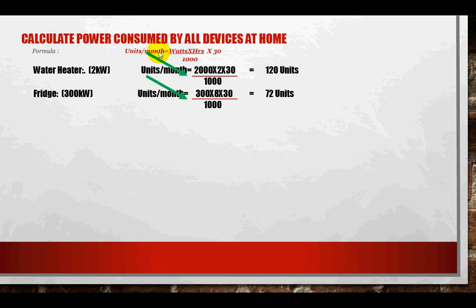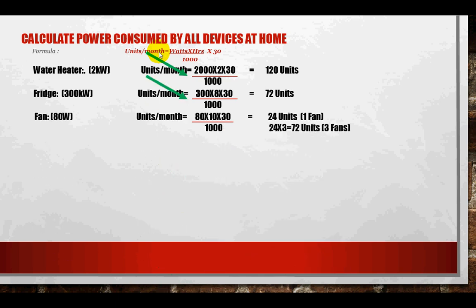Next is the fan. A fan operates at 80 watts for a period of 10 hours per day. Over 30 days it consumes 24 units. So one fan consumes 24 units, and therefore three fans consume about 72 units per month.